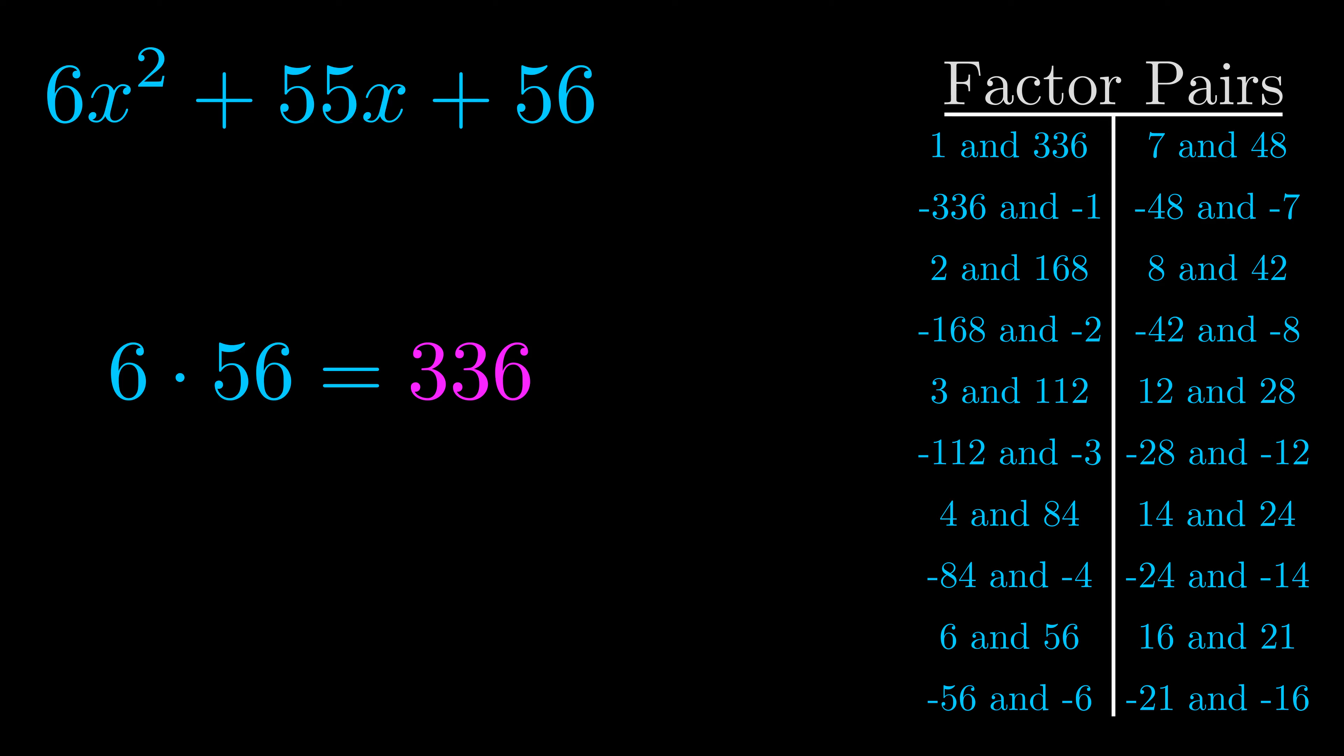The b value is the coefficient on the x term. That's the middle term, the one that we haven't done anything with yet. And really this is the only factor pair that we need.